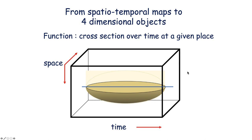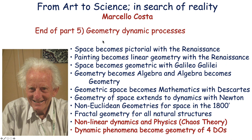Therefore, at the end of this, I'm happy to end by saying that we have a geometry of dynamical processes. When I started, space became pictorial with Renaissance. Painting became linear geometry with Renaissance. Space became geometry with Galileo Galilei. Geometry became algebra, and algebra became geometry. And geometrical space became mathematics with Descartes. Geometry of space extended to dynamics with Newton. The non-Euclidean geometries for space in the 1800s gave rise to the Einsteinian modern view of the universe with the theory of relativity. And then I dealt with the fractal geometry of all natural structures. And in this part, I gave you the idea of nonlinear dynamics or chaos theory, and the idea that dynamic phenomena can be portrayed in the geometry of four-dimensional objects, with spatial temporal maps.